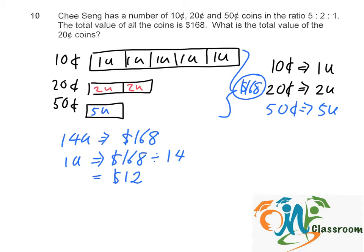20 cents coins, we have four units. So four units equals to 4 times $12. We have $48 worth of 20 cents coins.